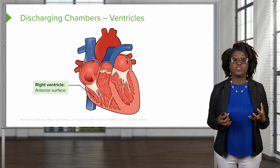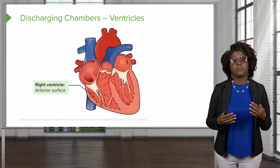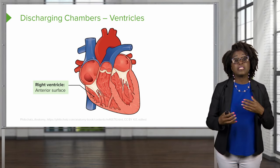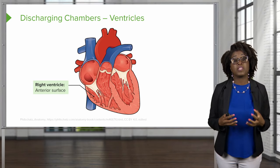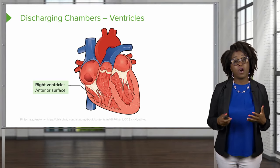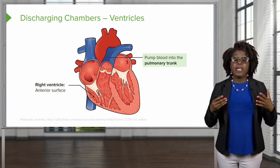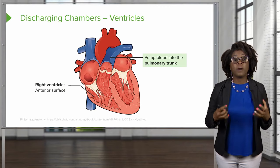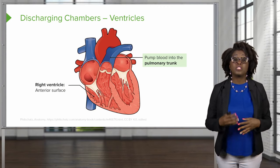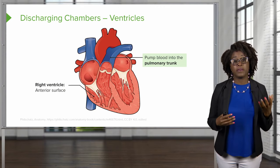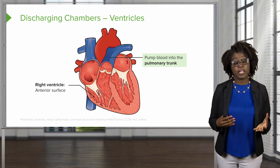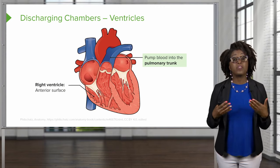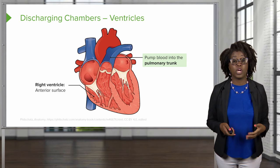The right ventricle is on the anterior surface of the heart and pumps blood into the pulmonary circuit by way of the pulmonary trunk.